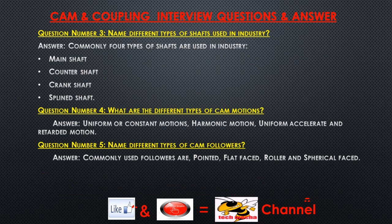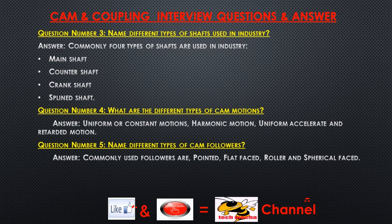Question number three: Name different types of shafts used in industry. Answer: Commonly four types of shafts are used in industry — main shaft, counter shaft, crankshaft, and spline shaft. Question number four: What are the different types of cam motions? Answer: Uniform or constant motion, harmonic motion, and uniform accelerated and retarded motion.